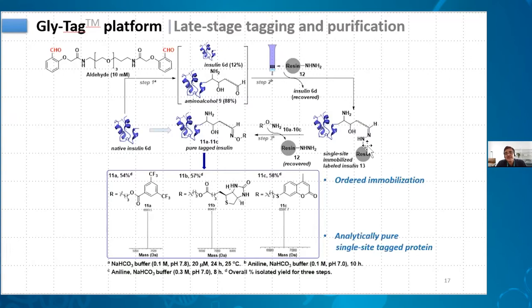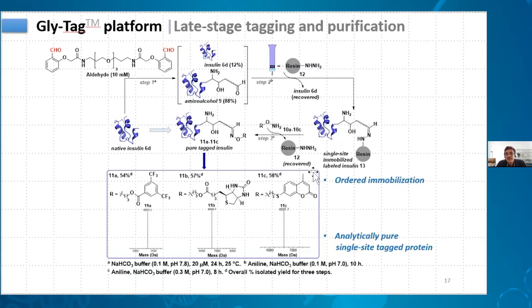This is a very convenient method of purification without having to separate things through regular FPLC or HPLC. Even in the second case, only the transoximized product is going to be released and not the unreacted one, providing another purification step. All this can be done very quickly with almost absolute efficiency. The overall loss is less than five to ten percent, whereas regular LC methods result in much more material loss.